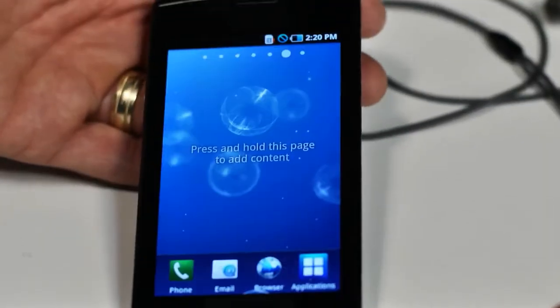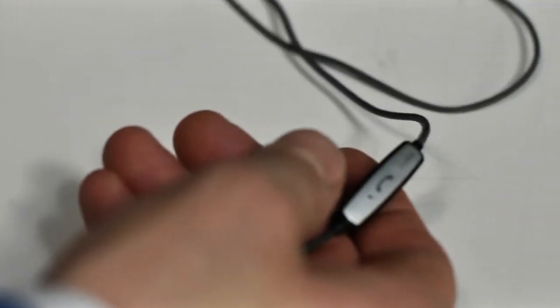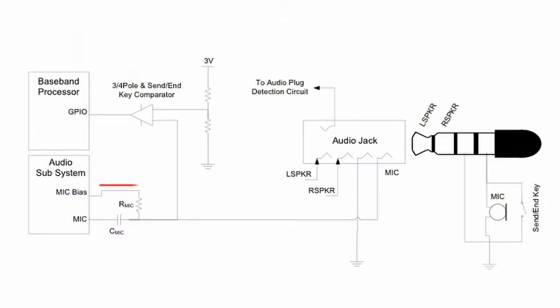First, let's take a look at the leakage current here in the lab. Many phones today are used as MP3 players. When used in this capacity, the send/end key is used for play and pause. Here is a schematic of the leakage path.